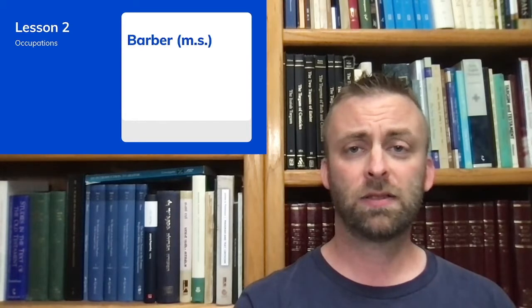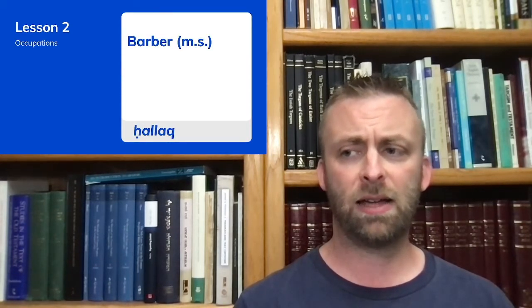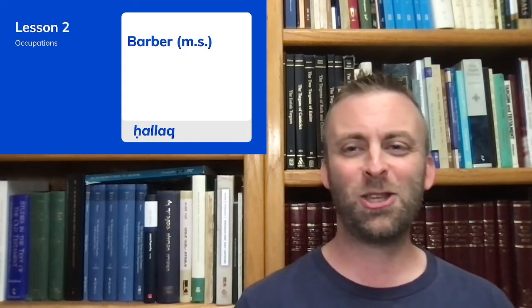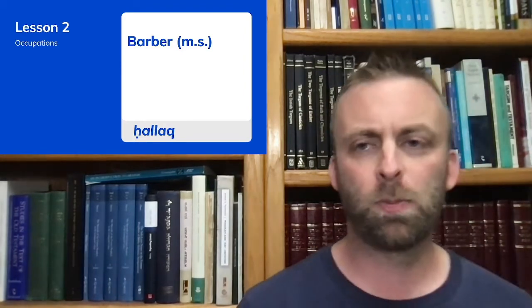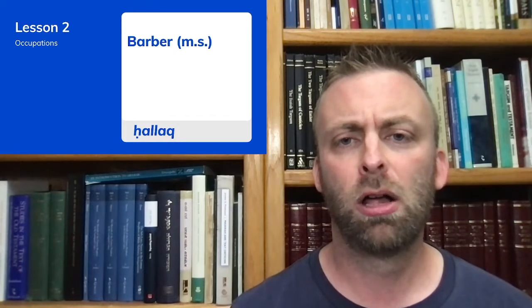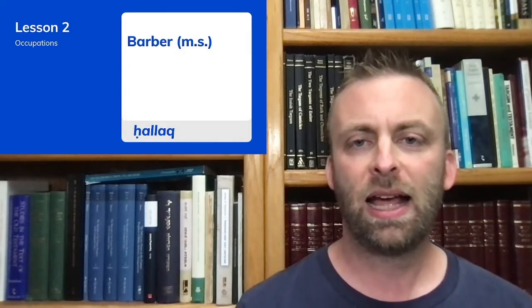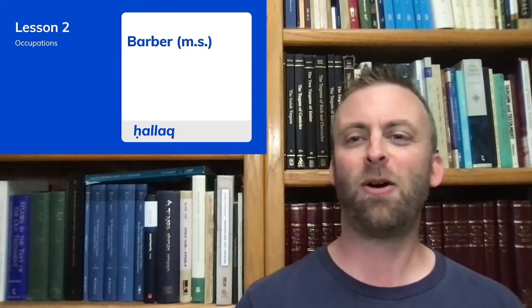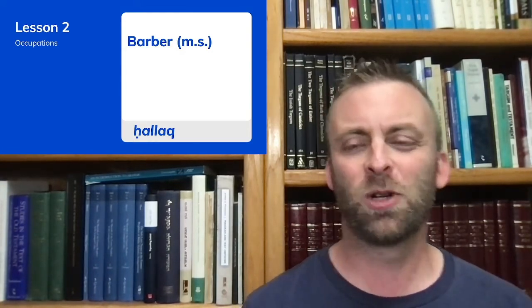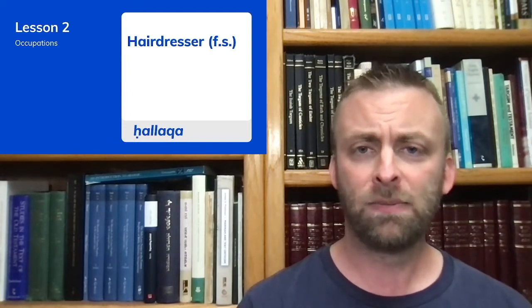A barber in the masculine singular form would be halla'. Notice that the Q is not pronounced — this is an interesting feature in Palestinian Arabic. Some people will pronounce this letter as Q, while others will pronounce it as a stop of the vowel: halla'. You hear how the vowel A stops when we have that Q. We'll talk more about this in a future lesson. A hairdresser — one way to say that is halla'a.